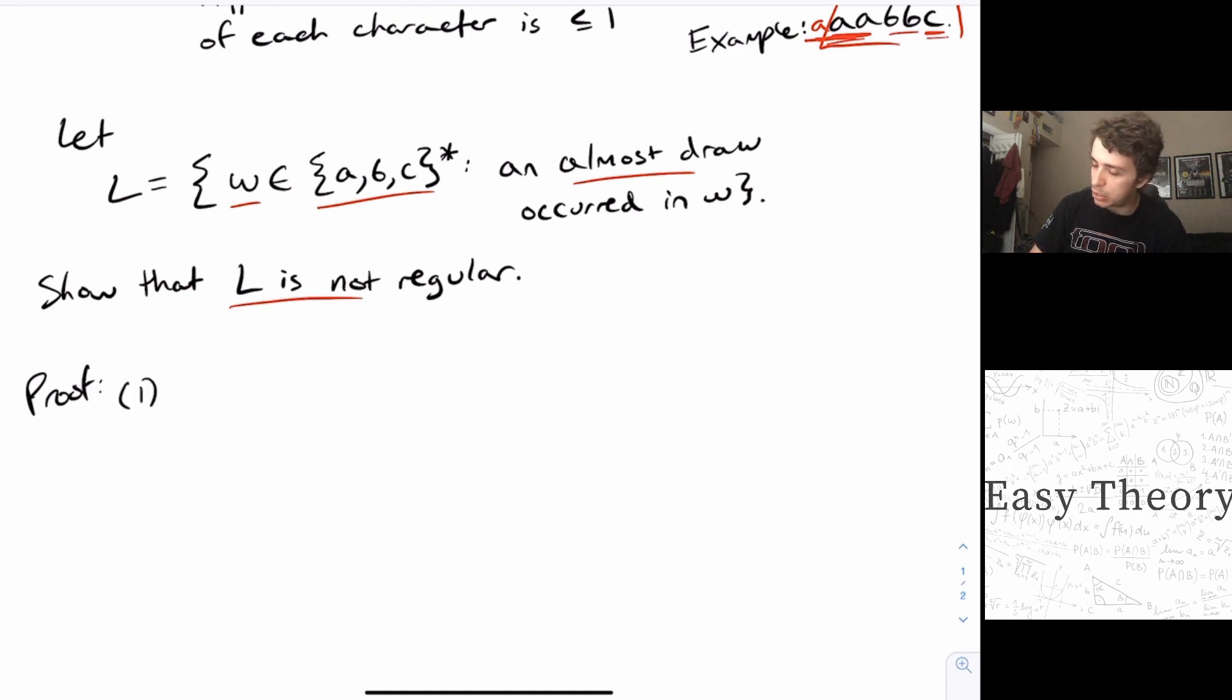So the first step is to assume that L is regular. And then the second part is because we know that L is regular from the first step, we know that there exists a pumping constant P for L.